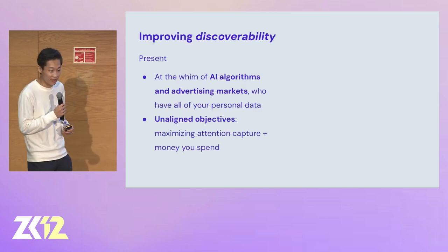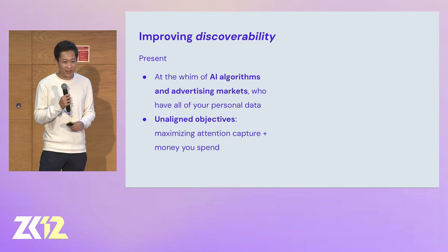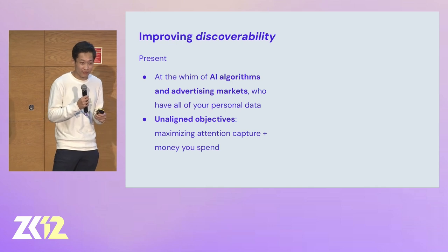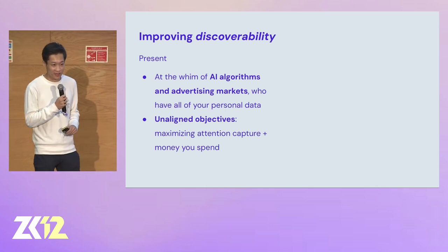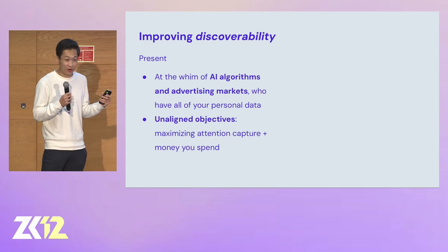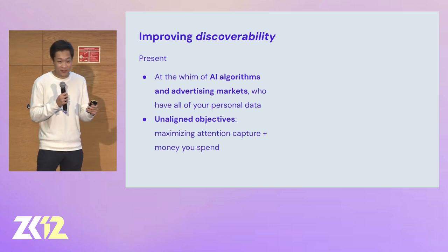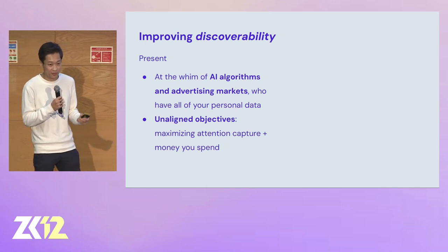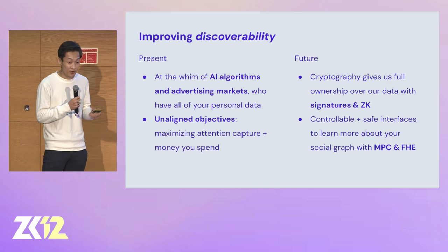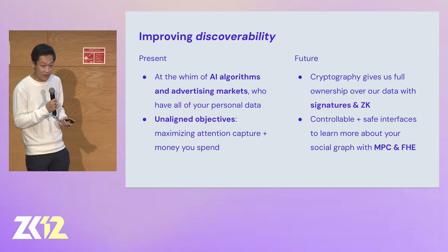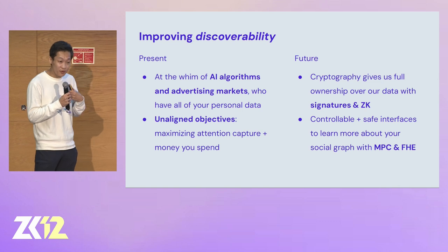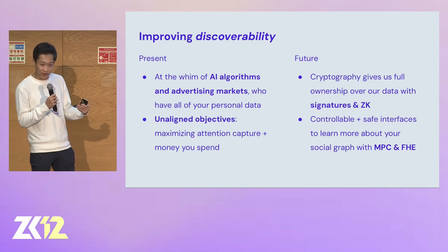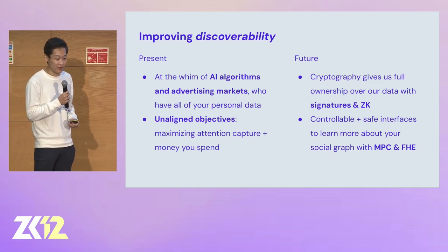First off is discoverability. So many social apps today are using a push-based model. Big algorithms or advertising feeds tell you what you're going to look at — you don't really have control over what you see. And these feeds are based on maximizing how much time and money you spend on the apps. On the other hand, cryptography offers a few advantages: you own your own data, so you get to choose how you interact with these apps and who gets to see your data.